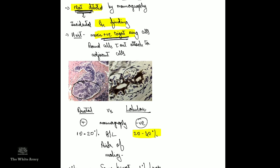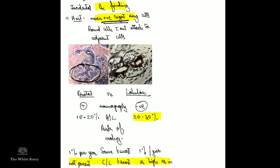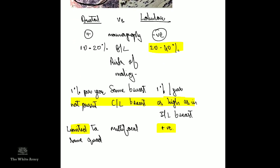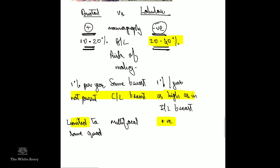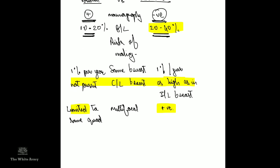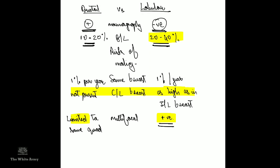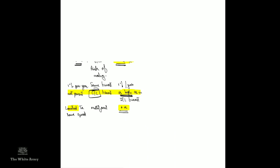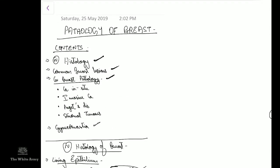Histologically, LCIS shows mucin-positive signet ring cells — round cells not attached to each other — and on immunohistochemistry, cells are E-cadherin negative. Comparing lobular and ductal: ductal can be detected on mammography, lobular cannot. Bilaterality is 20 to 40% in lobular versus 10 to 20% in ductal. Multifocality occurs in lobular but not in ductal carcinoma. The risk of malignancy is 1% per year, but in lobular carcinoma there is also increased malignancy risk in the contralateral breast, which is not seen in ductal carcinoma.